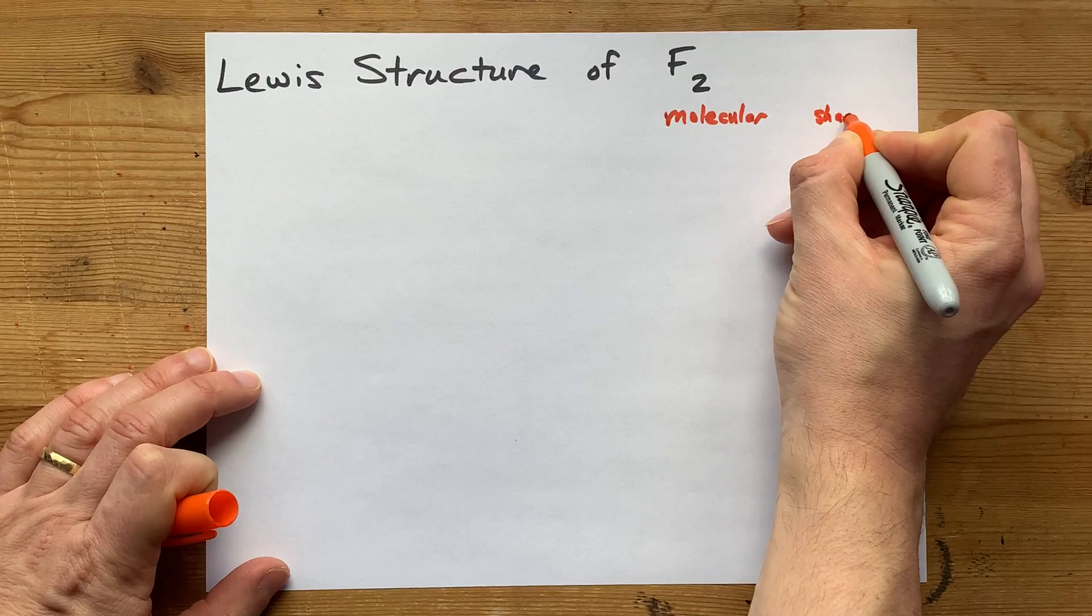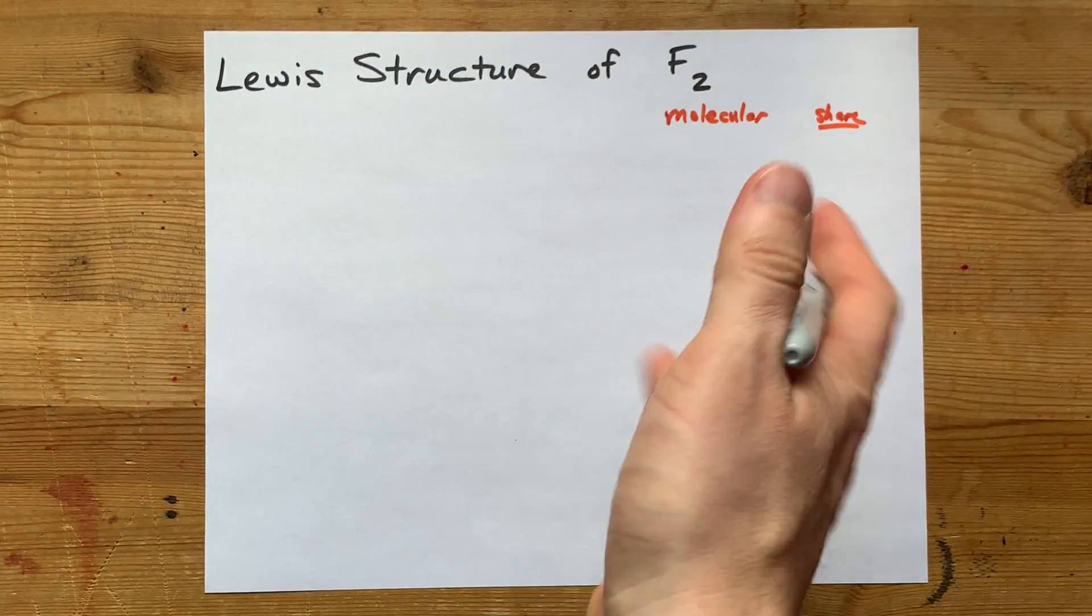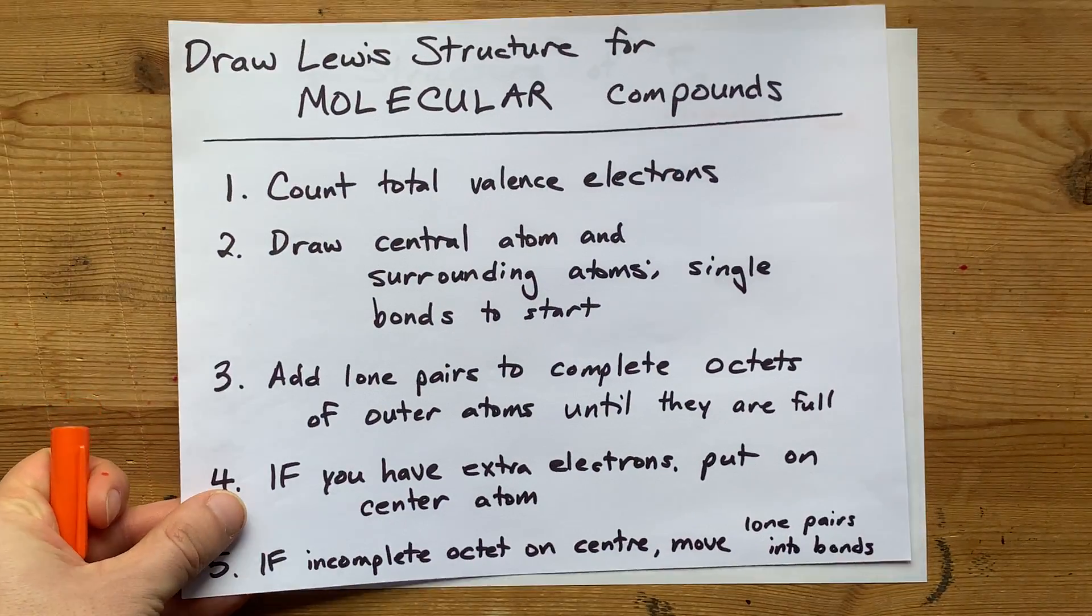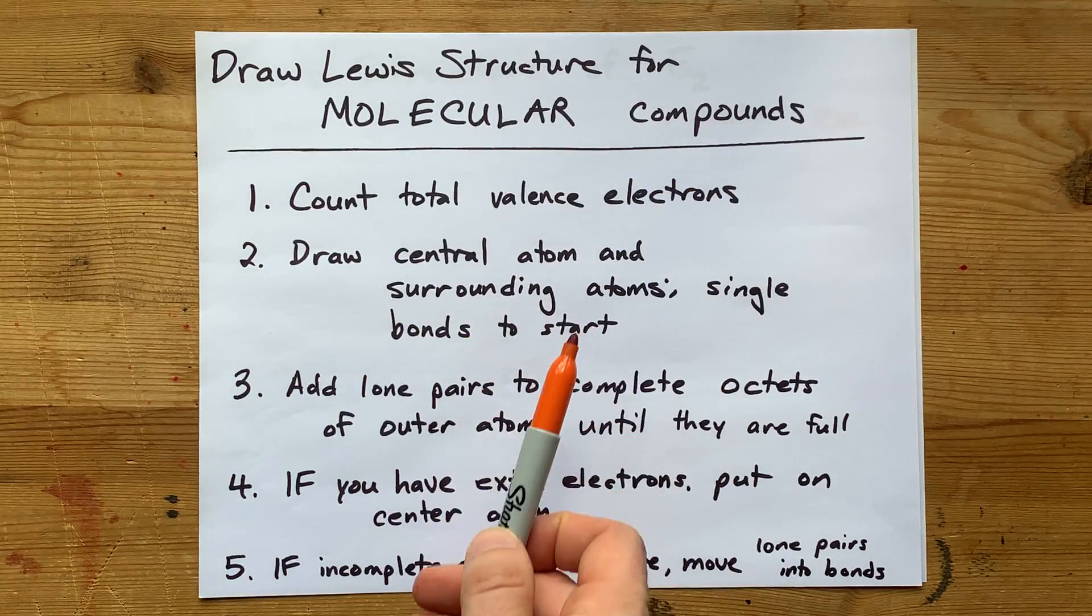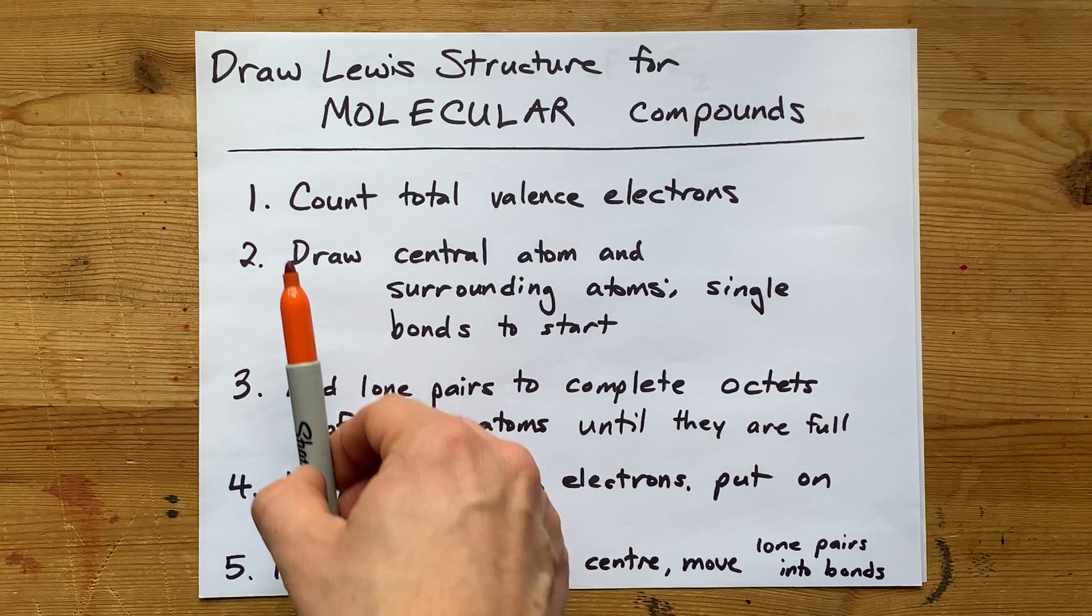That means they're going to be sharing electrons, as opposed to an ionic compound, which is a metal and a non-metal, which does a transfer of electrons from one to another. For a molecular compound, I have a little method to draw the Lewis structure, which I'll walk you through.